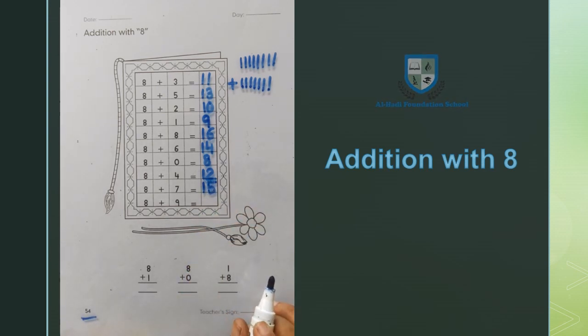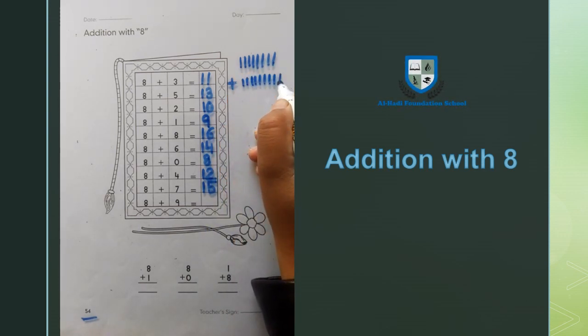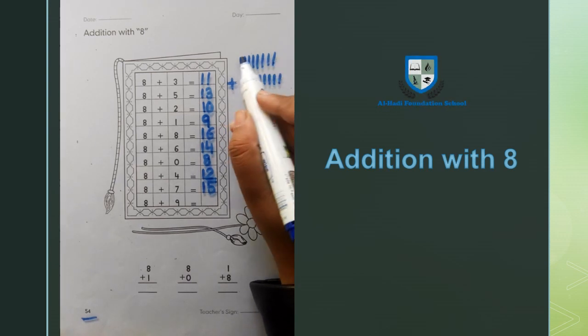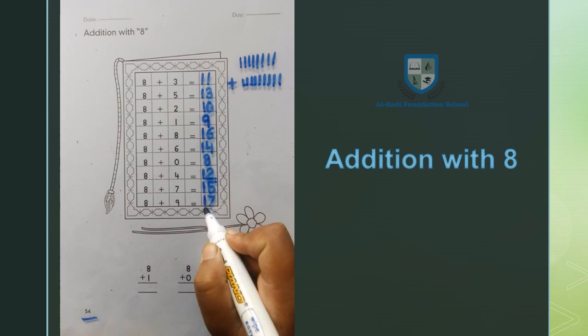Next, 8 plus 9. 1, 2, 3, 4, 5, 6, 7, 8, 9. Now we will count these. 8, 9, 10, 11, 12, 13, 14, 15, 16, 17. 8 plus 9 equals 17.